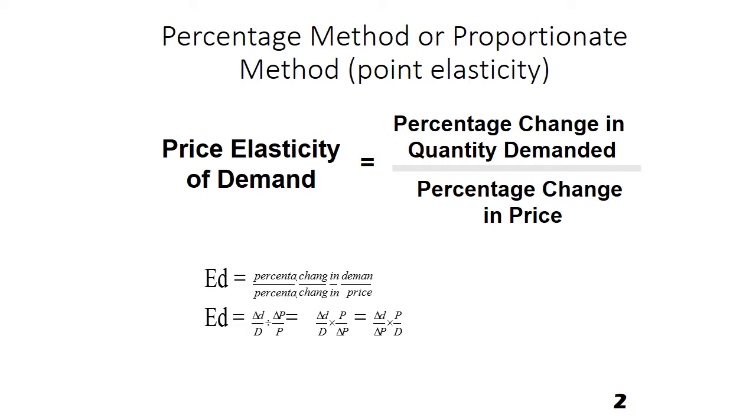It is also point elasticity because we calculate elasticity at a particular point on the demand curve. The formula is percentage change in quantity demanded upon percentage change in price. In terms of proportion, we have delta D upon delta P multiplied by P times D. Now, what is delta D? Delta D is change in quantity demanded. So we subtract from the new quantity the previous quantity. Same way for the price, we subtract the new price from the previous price. And for P and D, we have the original price and original quantity demanded.